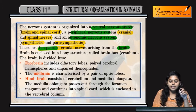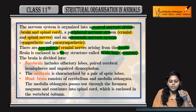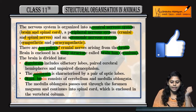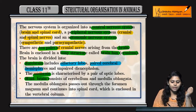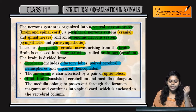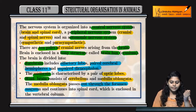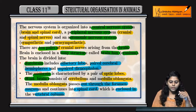जो brain है, that is enclosed in brain box, जिसे cranium बोलते हैं. This brain box or cranium is a bony structure. Brain is divided into forebrain, midbrain and hindbrain. Forebrain includes olfactory lobes, paired cerebral hemispheres, and unpaired diencephalon. Midbrain consists of optic lobes. Hindbrain consists of cerebellum and medulla oblongata. The medulla oblongata passes out through the foramen magnum and continues up to spinal cord, which is enclosed in vertebral column.